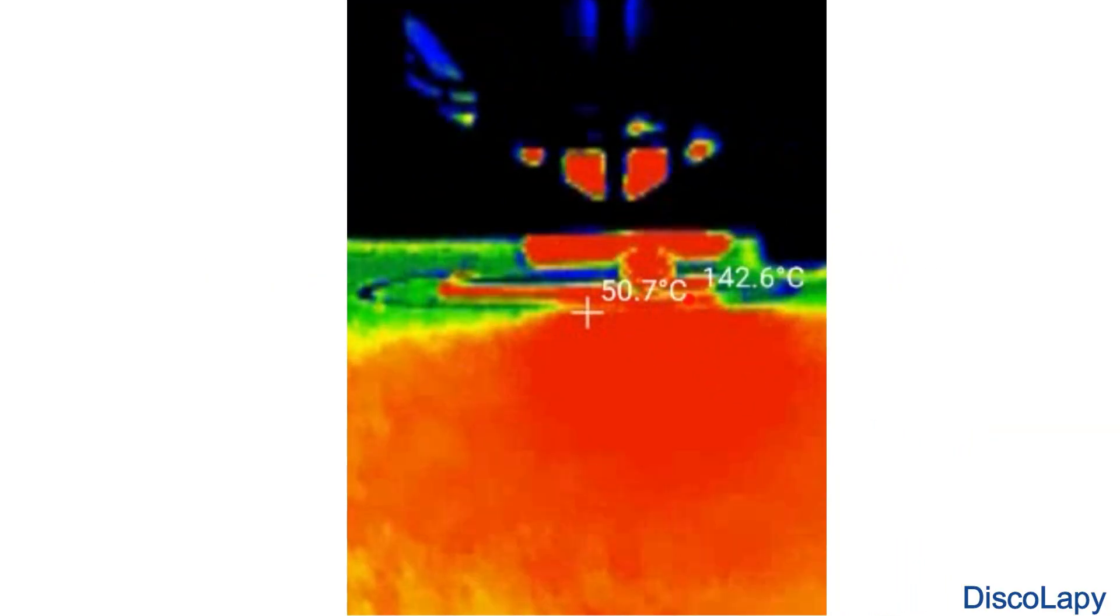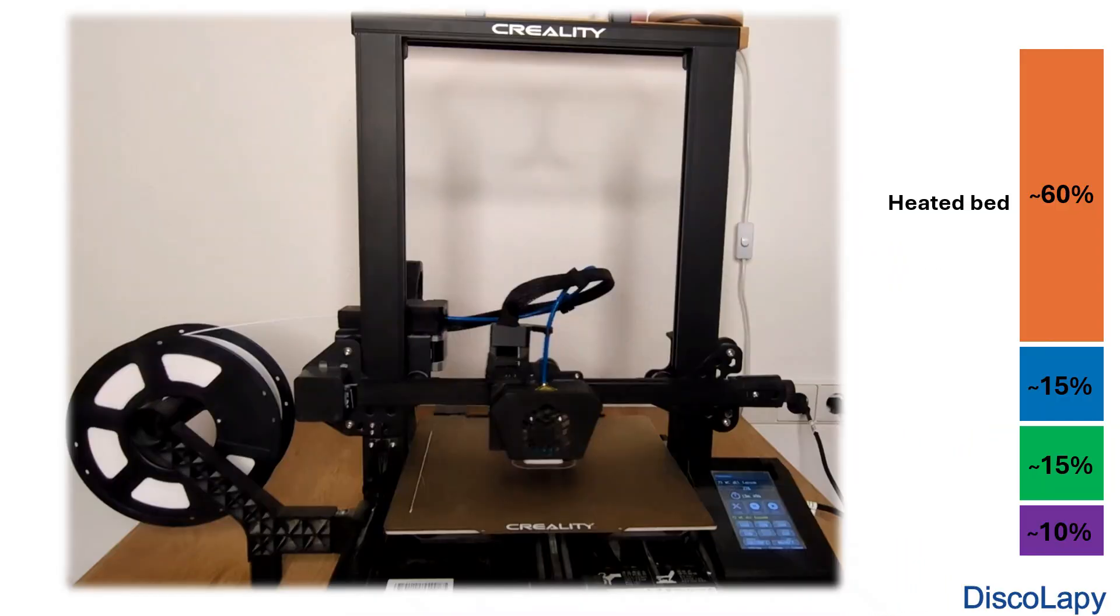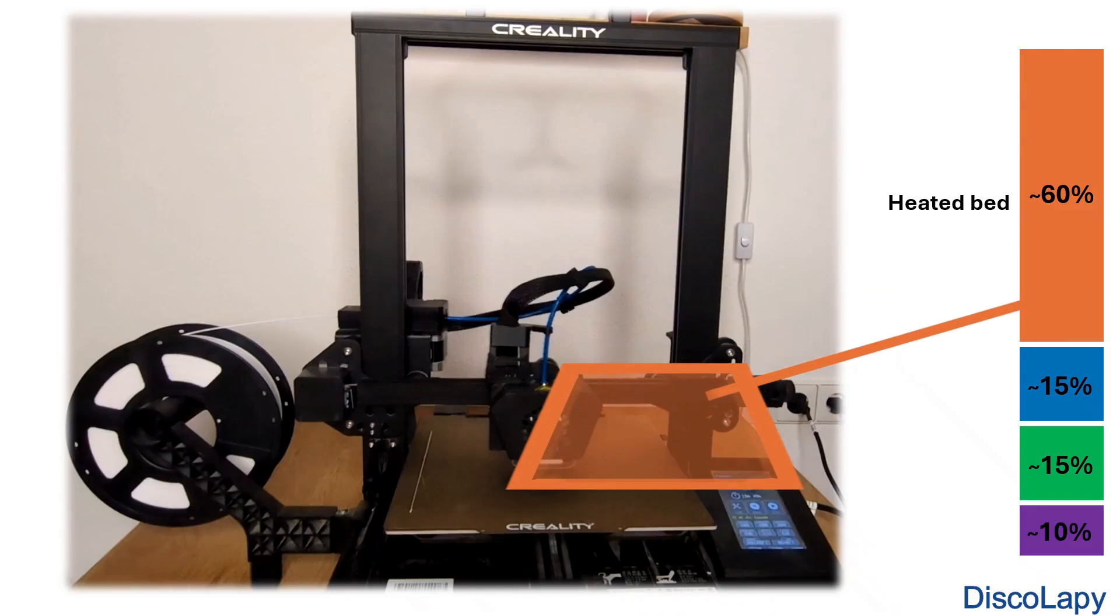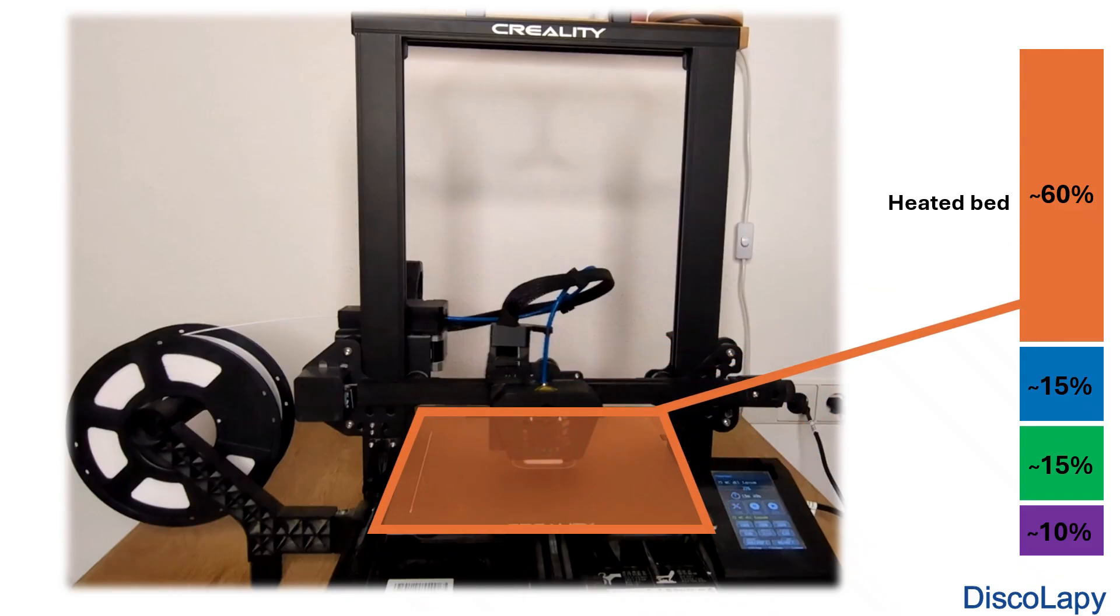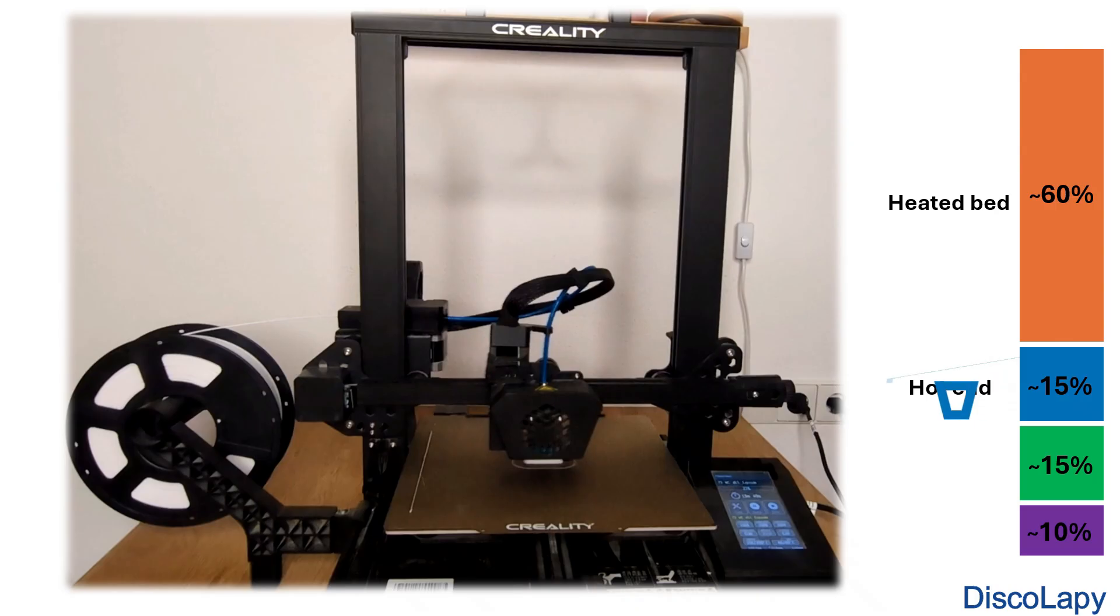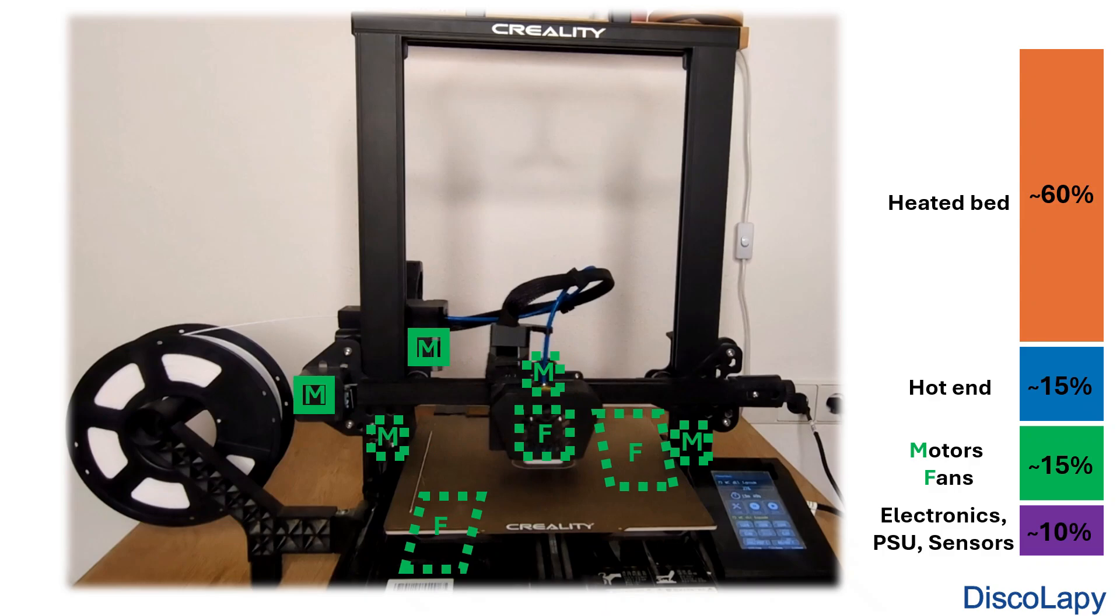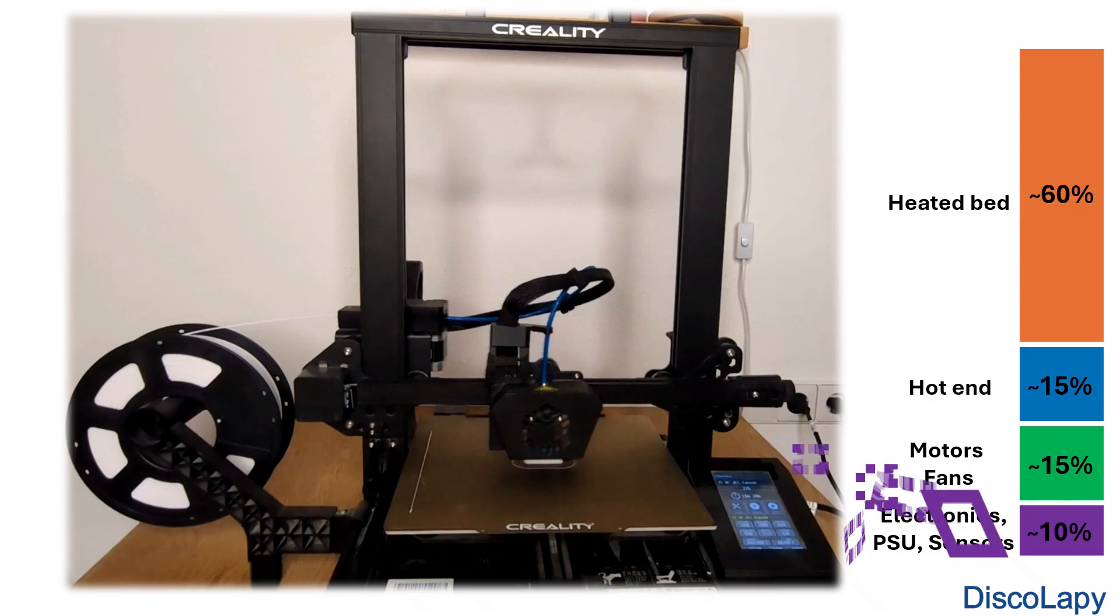To sum it up, for a typical hobby 3D printer, a bit more than half of the power goes into the heated bed, about 10 to 20 percent into the hot end, around 10 percent into the motors and fans, and the rest is lost in the electronics and the power supply.